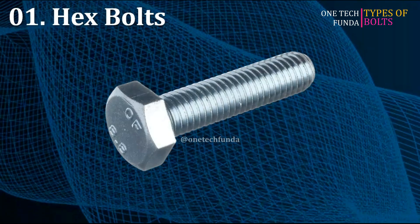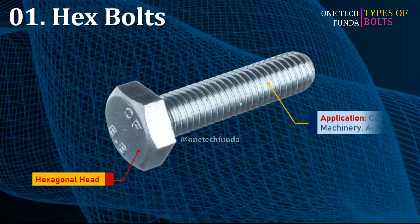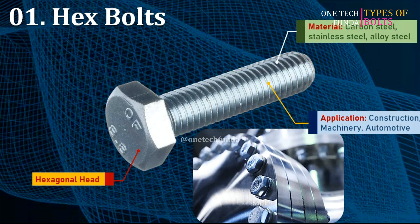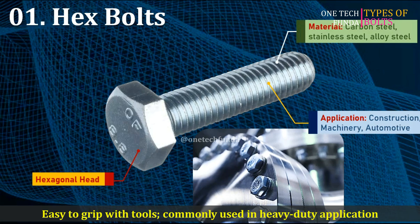Hex bolts, or hexagonal bolts, are standard bolts with a hexagonal-shaped head and threaded body. Commonly used in construction, machinery, and automotive applications. Materials include carbon steel, stainless steel, and alloy steel. The main advantage is they are easy to grip with tools and commonly used in heavy-duty applications.